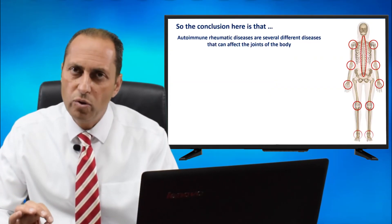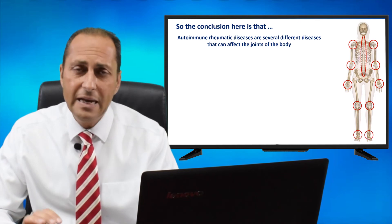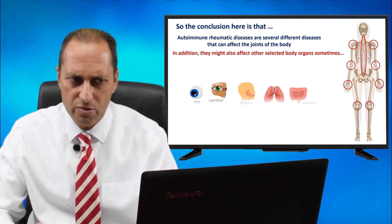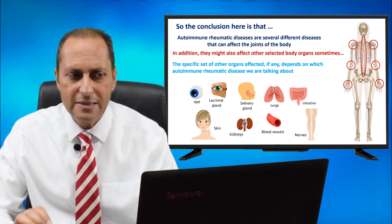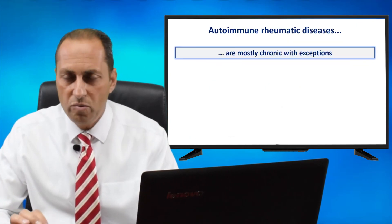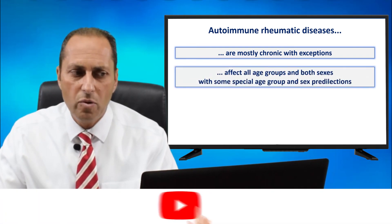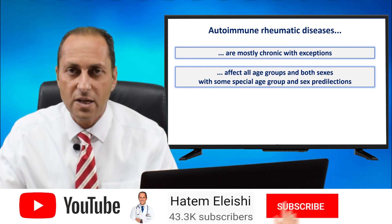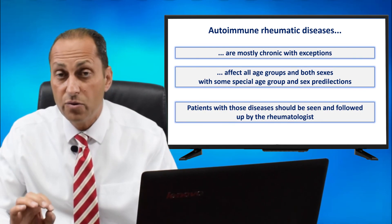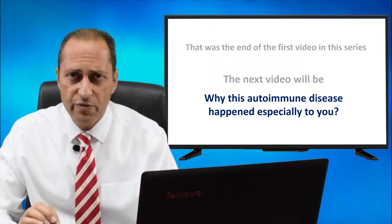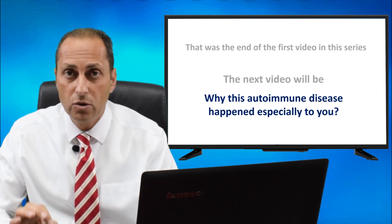In conclusion, autoimmune rheumatic diseases are several different diseases that can affect the joints of the body and might also affect other selected body organs sometimes. The specific set of organs affected, if any, depends on which autoimmune rheumatic disease we are talking about. They are mostly chronic with exceptions, affect all age groups and both sexes with some predilections, and patients should be seen and followed up by the rheumatologist. The next video will cover why this autoimmune disease happened especially to you.